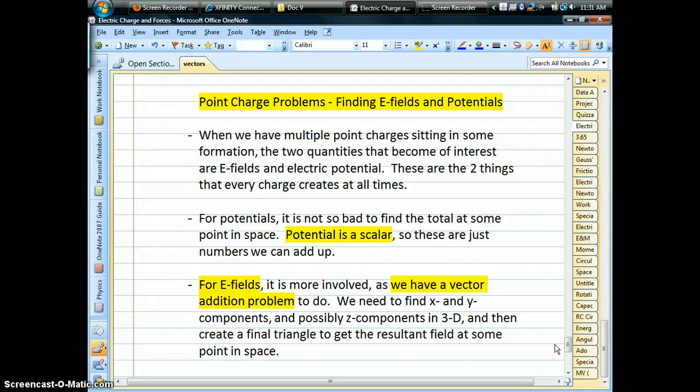Generally, the two quantities that all charges we believe in the universe create all around them are electric fields and electric potentials, or voltage as we like to call it. Whether it's a single electron, whether it's a big ball of charge, a balloon, a Van de Graaff electrostatic generator, it doesn't matter. They're producing fields and potentials.